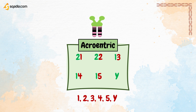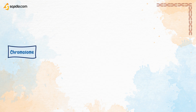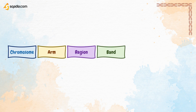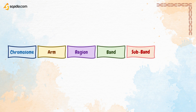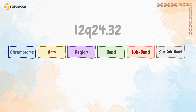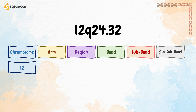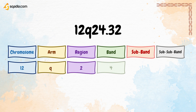Positions of genes along chromosome arms are defined by region number from the centromere outwards, using the notation: chromosome, arm, region, band, subband, and sub-subband numbers. For example, 12q24.32 refers to chromosome 12, long arm (q), region 2, band 4, subband 3, sub-subband 2.